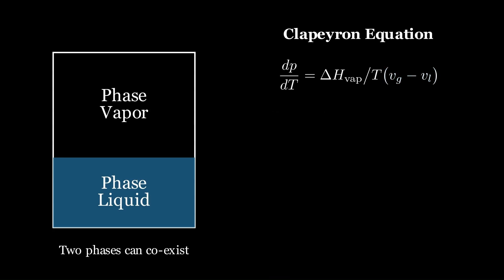Delta H_vap is the latent heat of vaporization, and V_g minus V_l is the difference in molar volumes between the vapor and liquid phases. To simplify the equation, we make a key assumption. The molar vapor volume is much larger than the molar liquid volume. So, V_g minus V_l is approximately just V_g.